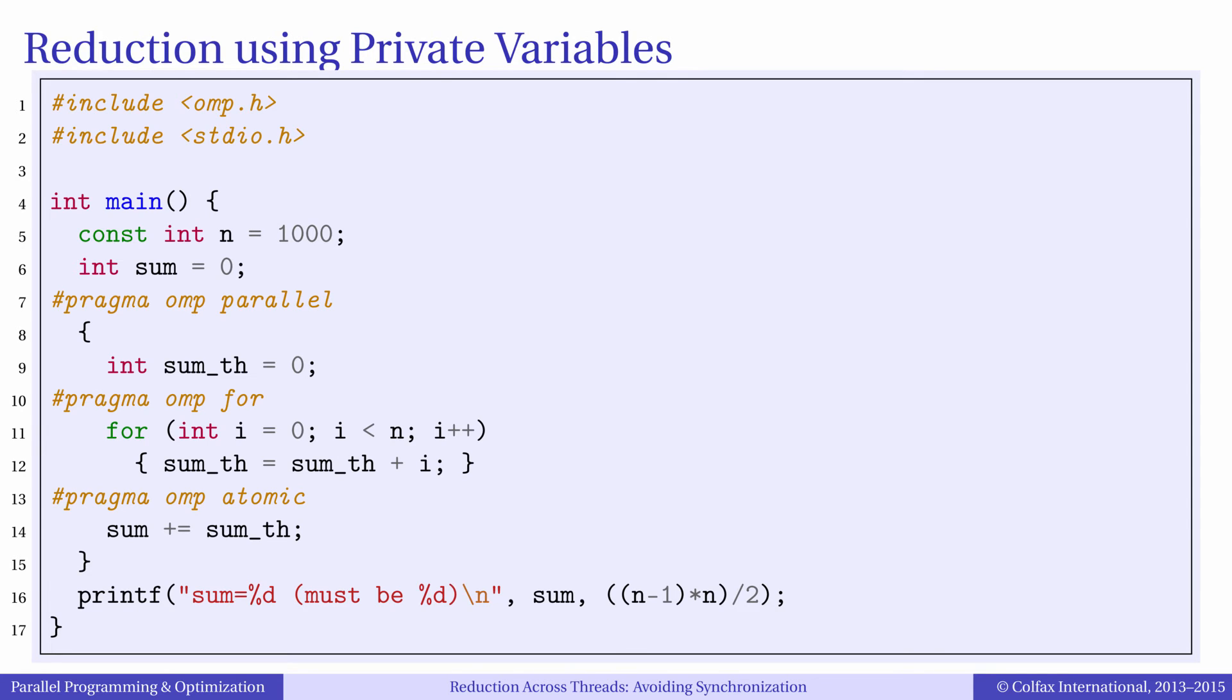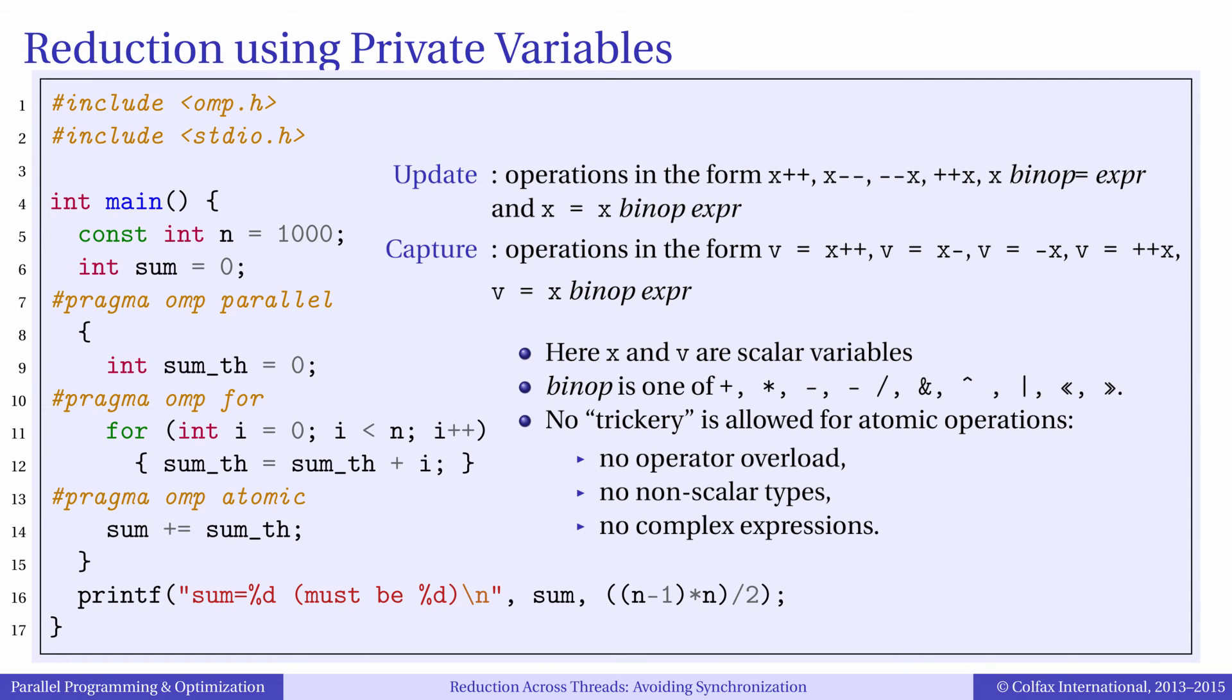The reason why we demonstrated the machinery of parallel reduction instead of just using the reduction clause of OpenMP is that the reduction clause has limitations. Specifically it can be applied only to scalars and to a limited set of operations.